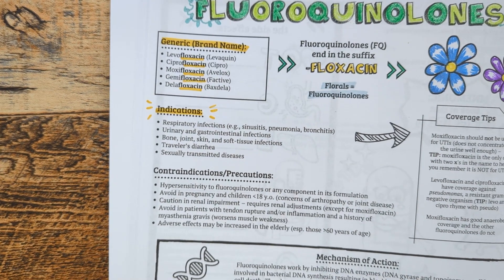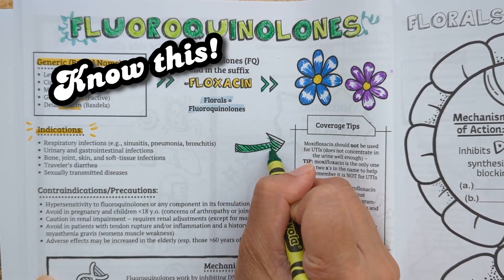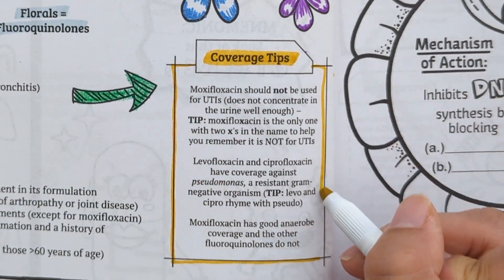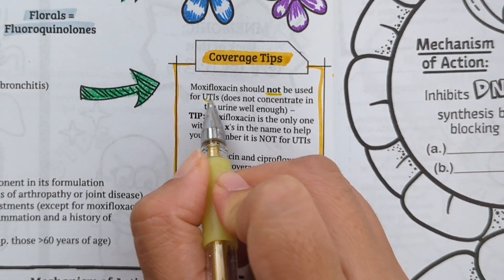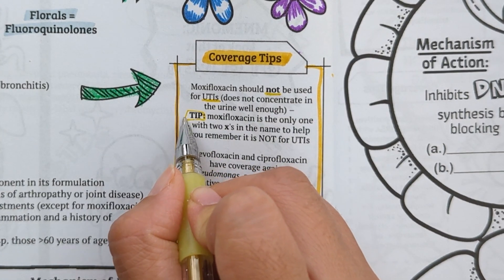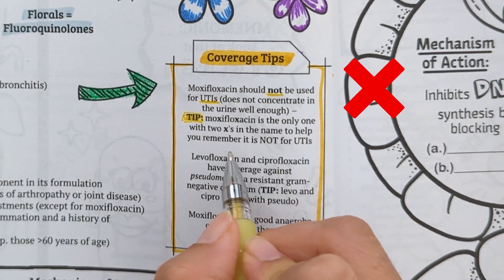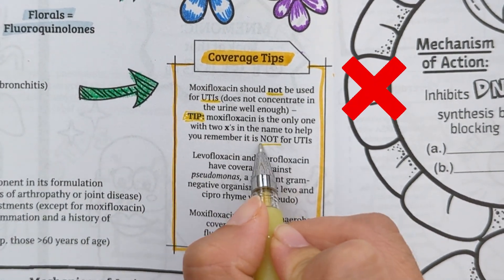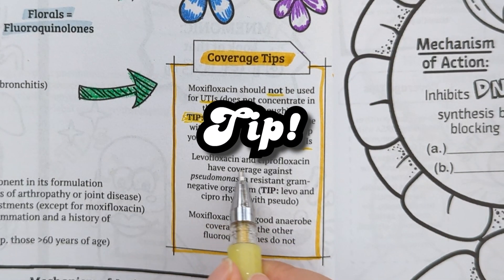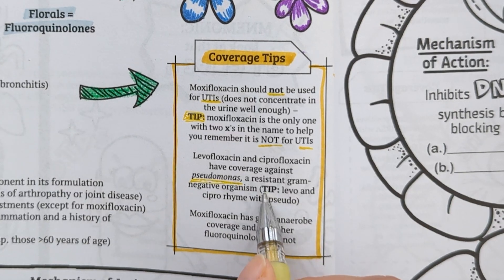Now let's review a couple of coverage nuances you will need to know for exams. If you're treating a UTI, do not use moxifloxacin as it does not concentrate well in the urine, leading to ineffective treatment. It is the only fluoroquinolone with a double X in its generic name to remind you that it should not be used for UTIs.